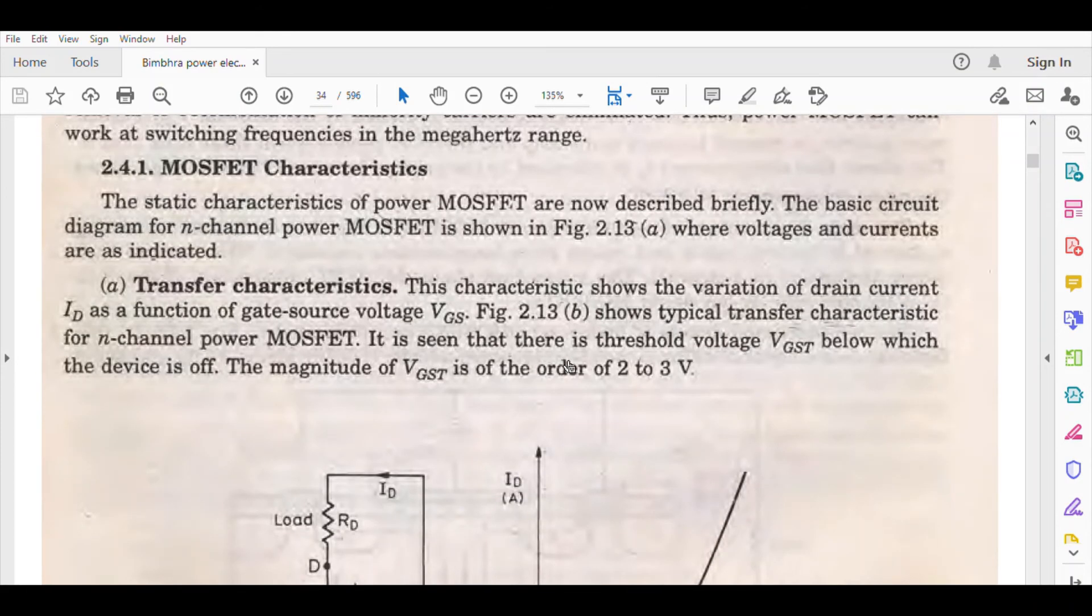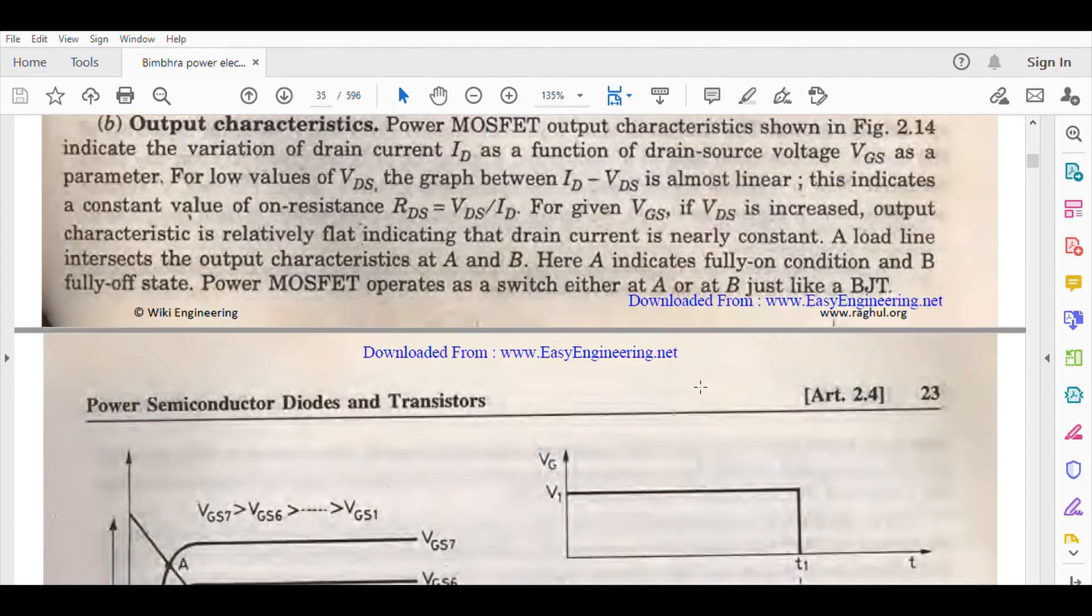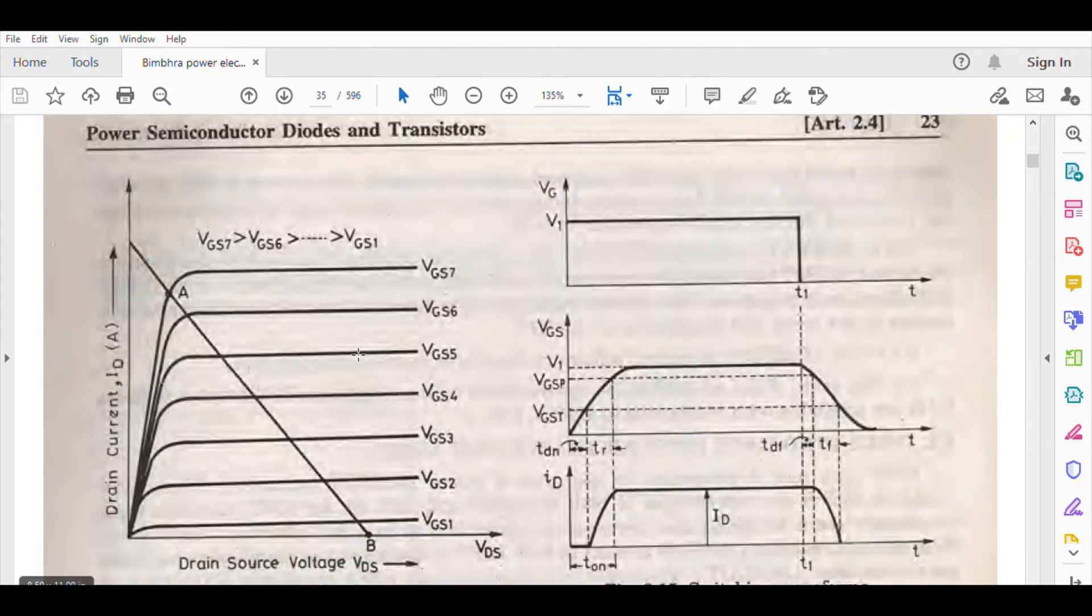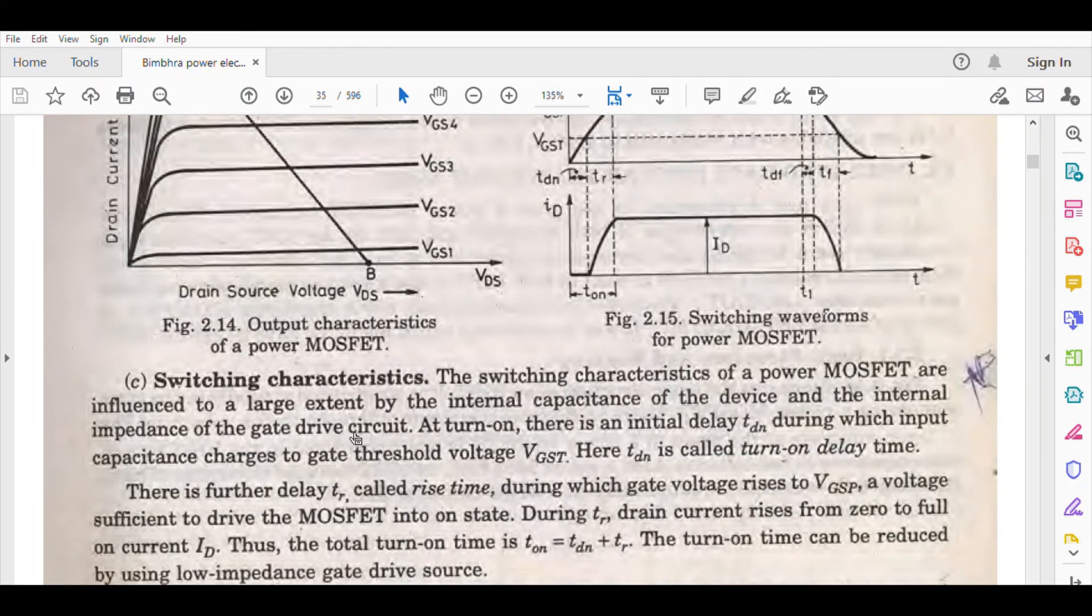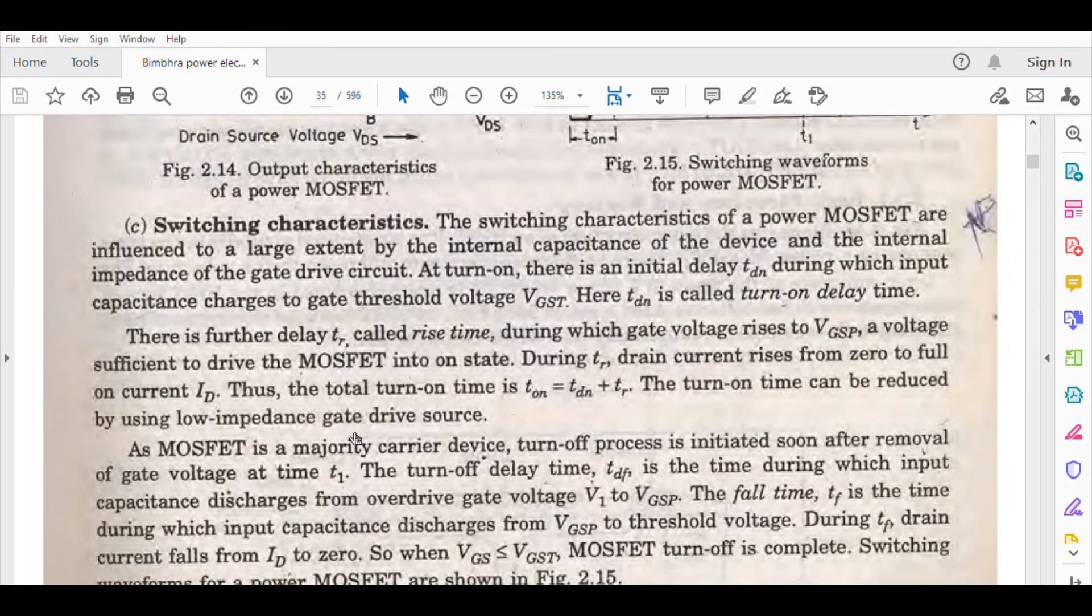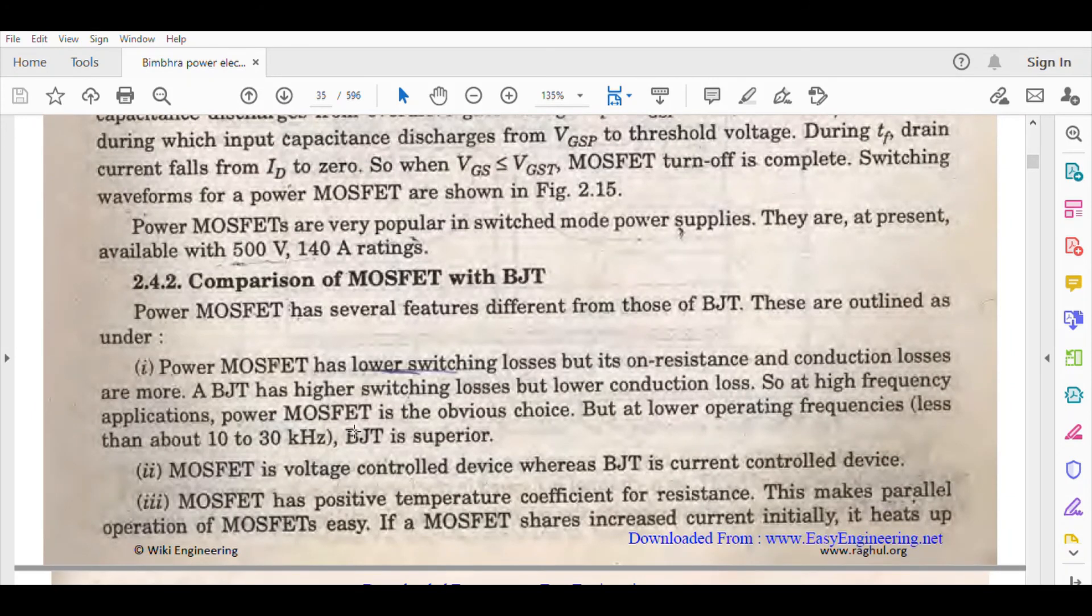Transfer characteristics: we plot VGS versus ID. This is VGST, the threshold voltage. You also know the output characteristics. These are all things you know from before. You will see how the rating is used. We will revise the entire concept of transistor, diode, and MOSFET. If you know it properly, there will be no difficulty in your exam.